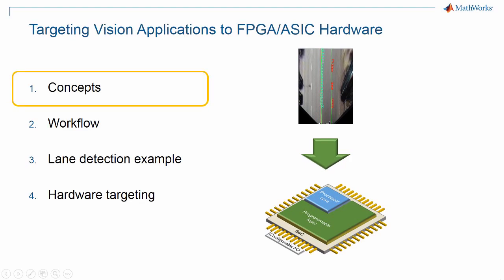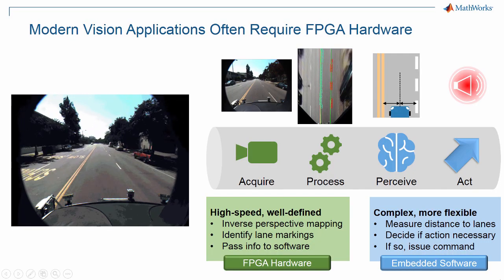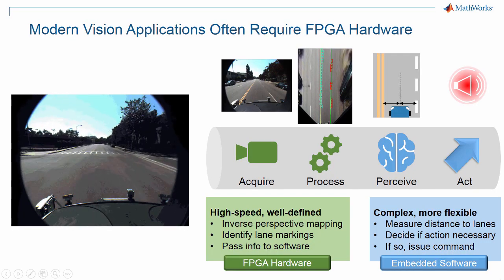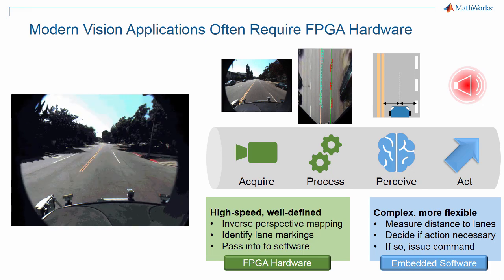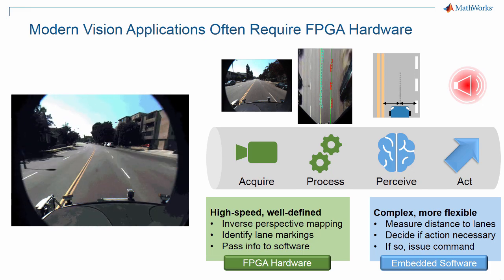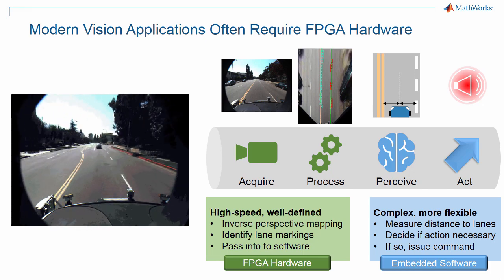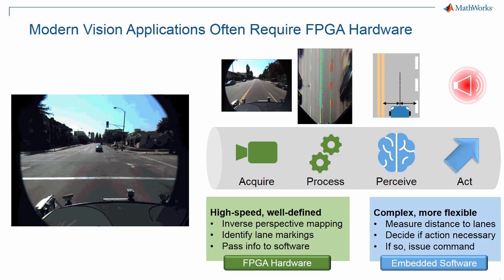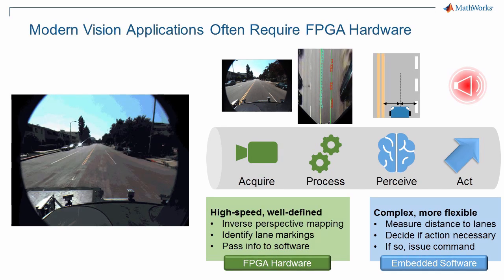Automated driving applications rely heavily on vision processing of video from onboard cameras. These applications must process large amounts of data at high speed. After all, you don't want any delay in corrective action at highway speeds. Even a 720p camera has nearly 1 million active pixels in a frame, and at 30 frames per second that requires high-speed processing.